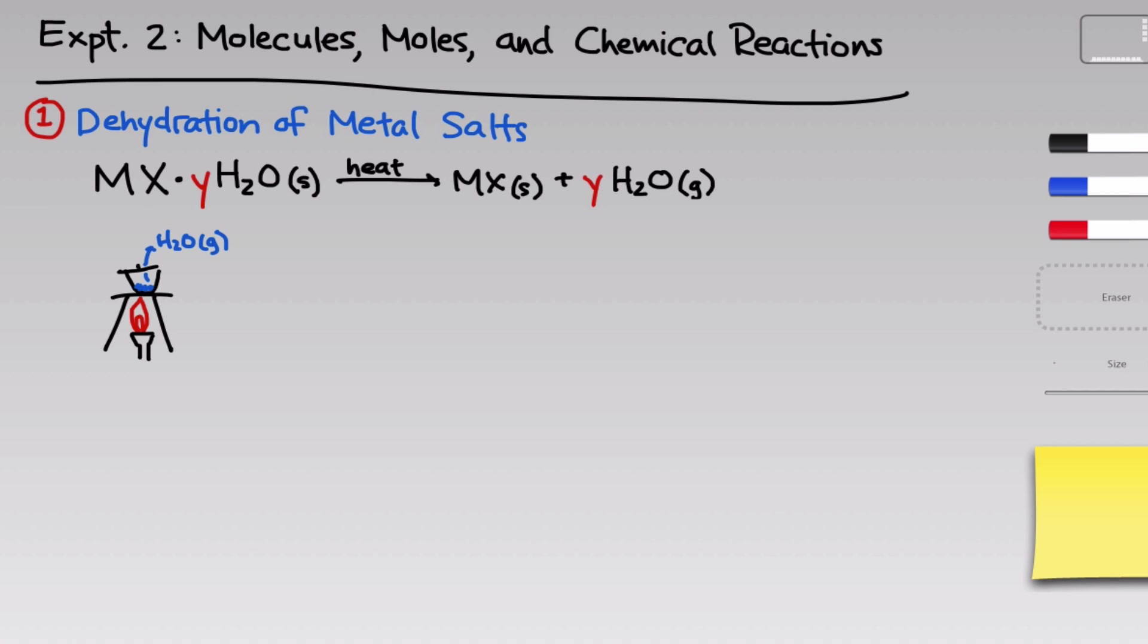The final mass of the crucible lid and sample tells us the mass of MX that's left over.